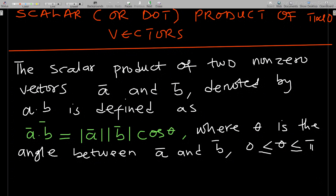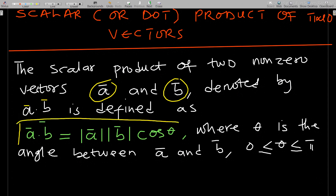The scalar product of two non-zero vectors a and b, denoted by a dot b, is defined as: a dot b equals the magnitude of a times the magnitude of b times cosine of theta. That is the formula, where theta is the angle between a and b.